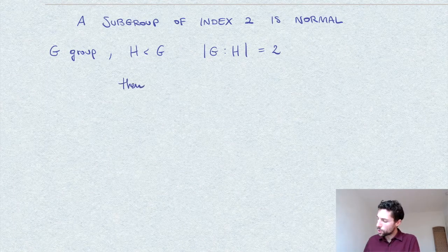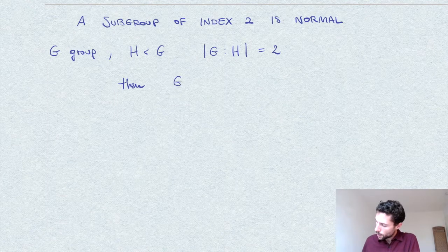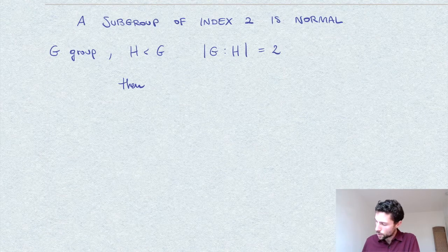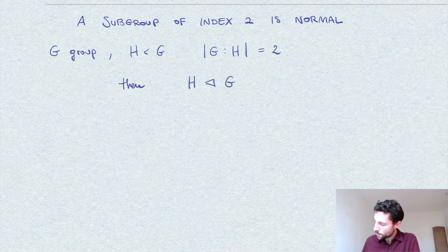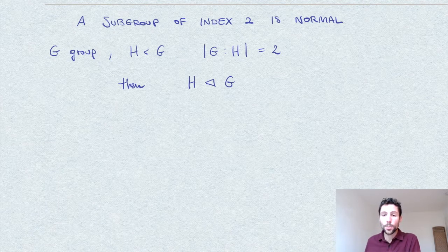What we want to show is that H is normal in G. It's a normal subgroup.